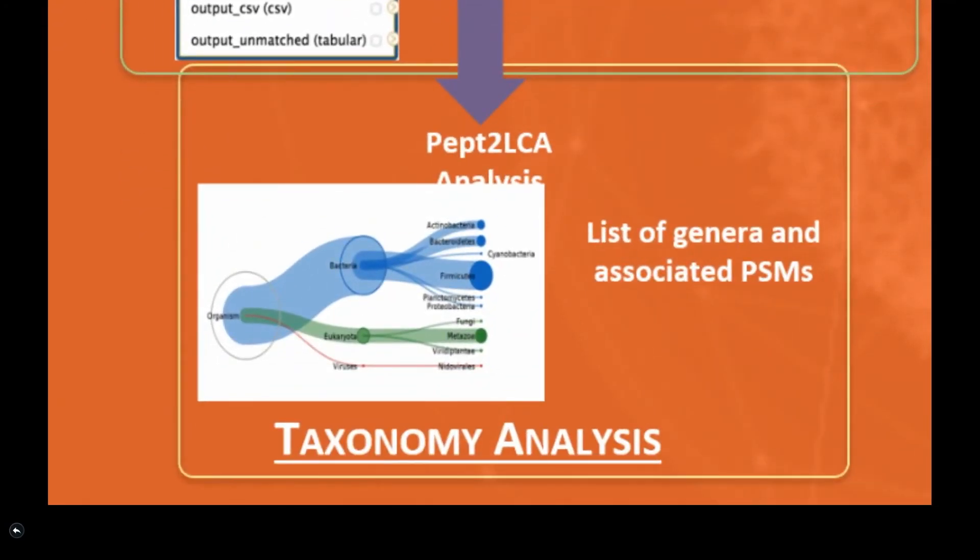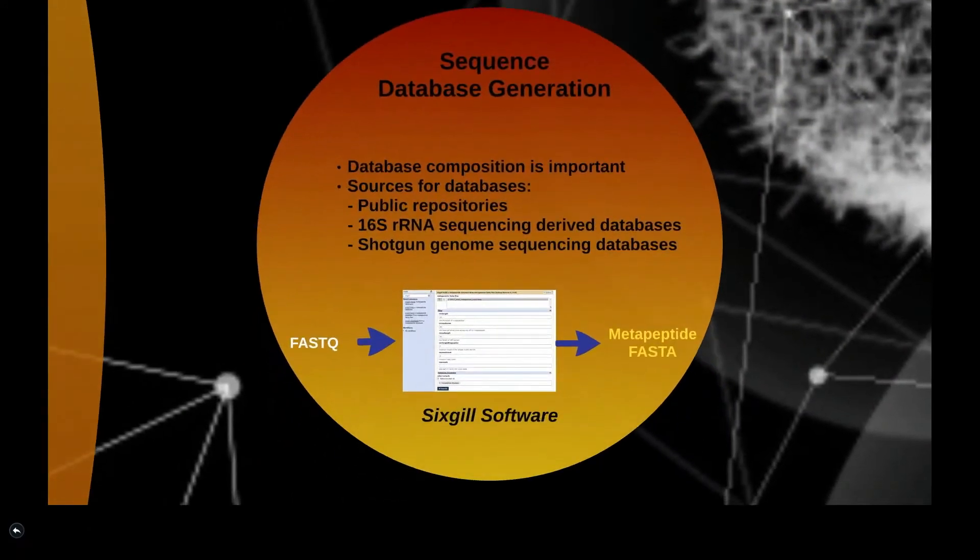Fourth, the identified microbial peptides can also be used for taxonomic analysis of the proteins present in the sample. Let's go through a step-by-step analysis of this workflow.